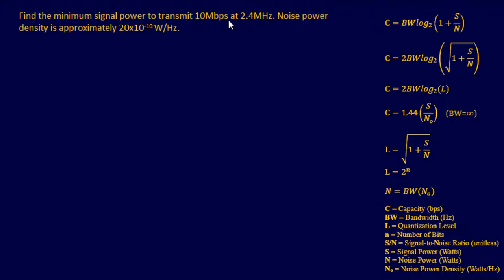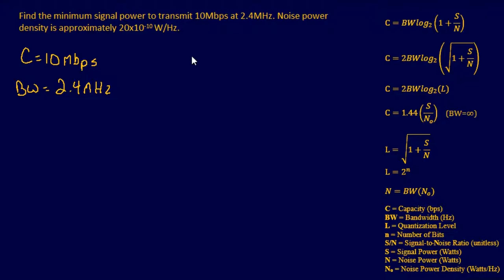For the last problem, we need to find the minimum signal power to transmit 10 megabits per second at 2.4 megahertz bandwidth. The noise power density is approximately 20 times 10 to the negative 10 watts per hertz. We know: capacity is 10 megabits per second, bandwidth is 2.4 megahertz, and noise density is 20×10⁻¹⁰ watts per hertz. We want to find signal power S. We'll need two equations since we must find noise power first.